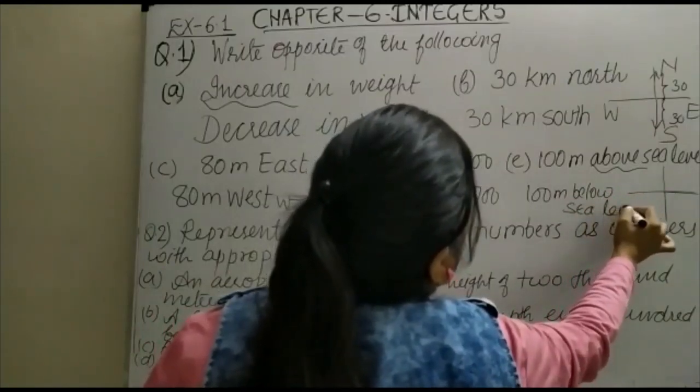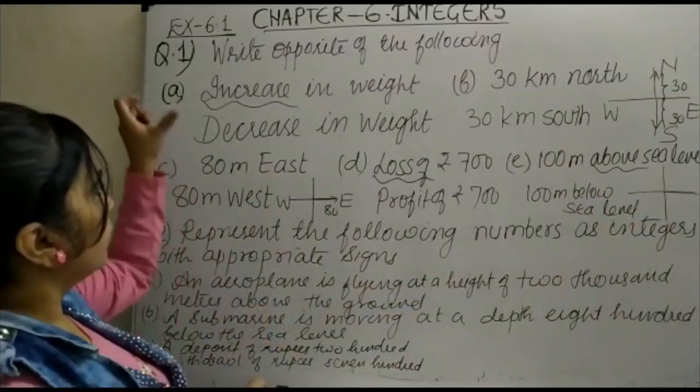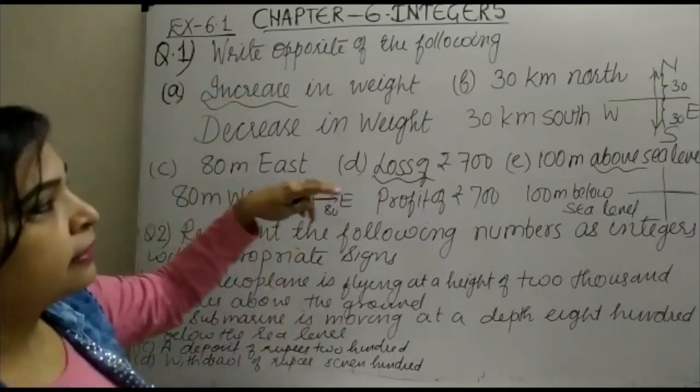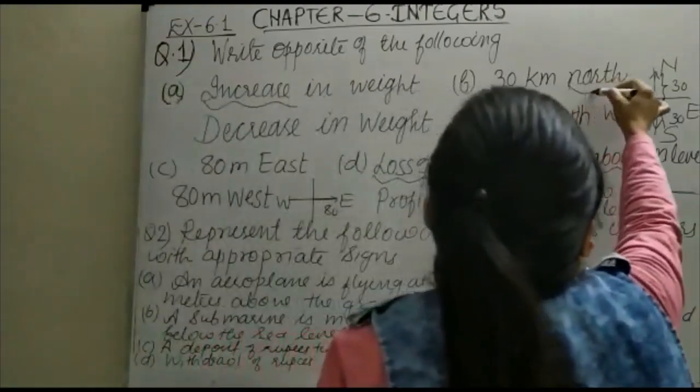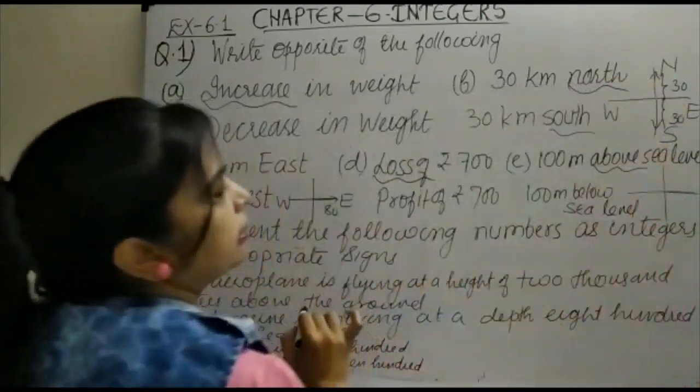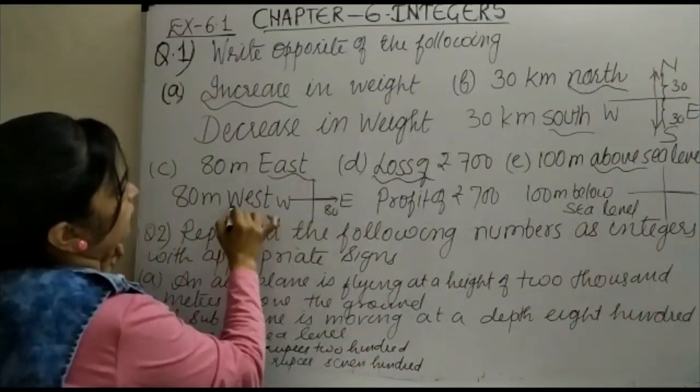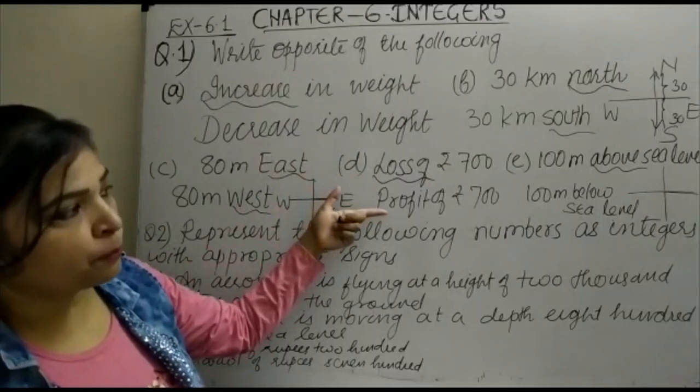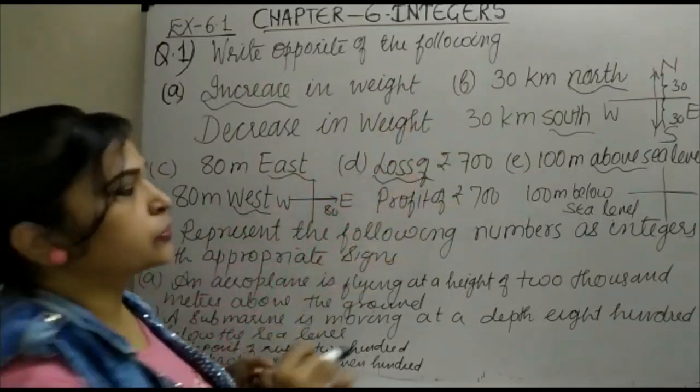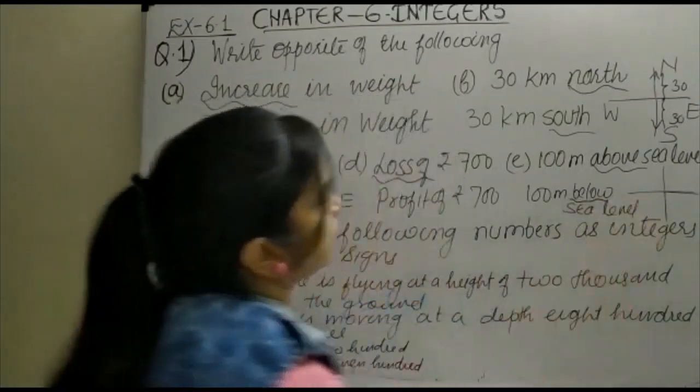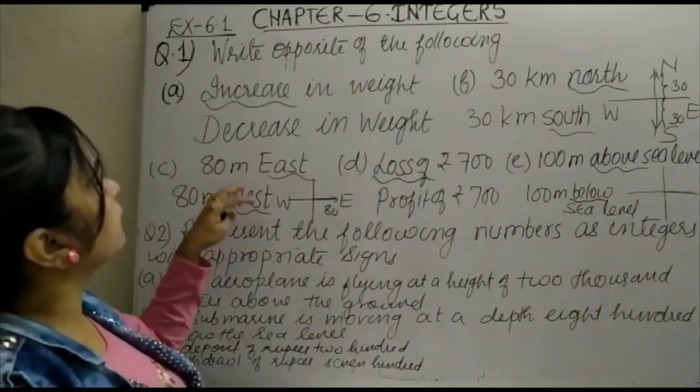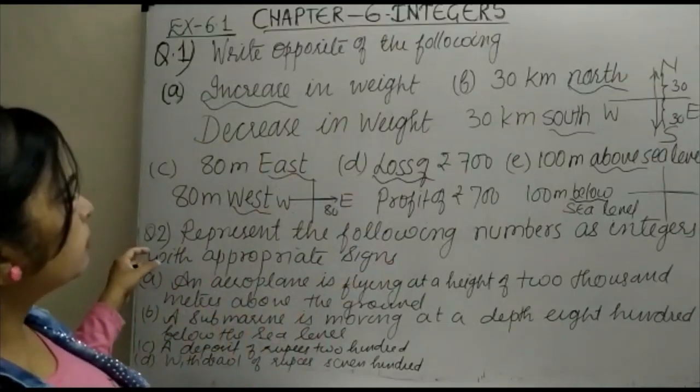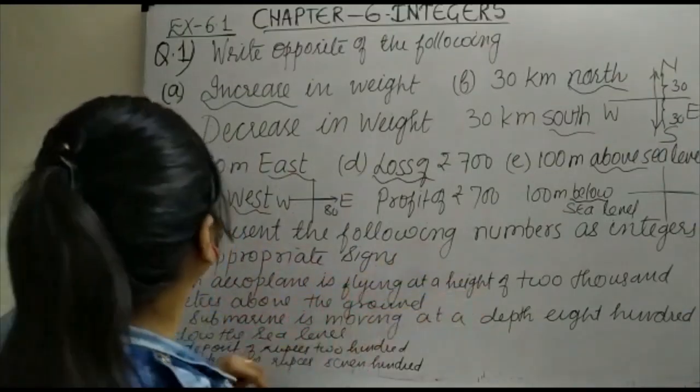So once again, in this way we have rewritten the same sentence with the opposite meaning. Now, question number two says: represent the following numbers as integers with appropriate sign.